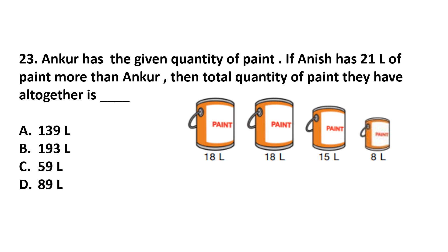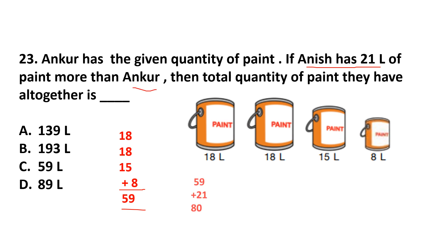Question number 23. Ankur has a given quantity of paint. If Anish has 21 liters of paint more than Ankur, then the total quantity of paint they have altogether is? First we add all of Ankur's numbers: 18 plus 18 plus 15 plus 8, which is 59. So Ankur has 59 liters of paint. Anish has 21 liters more than Ankur, so Anish has 59 plus 21 = 80 liters.